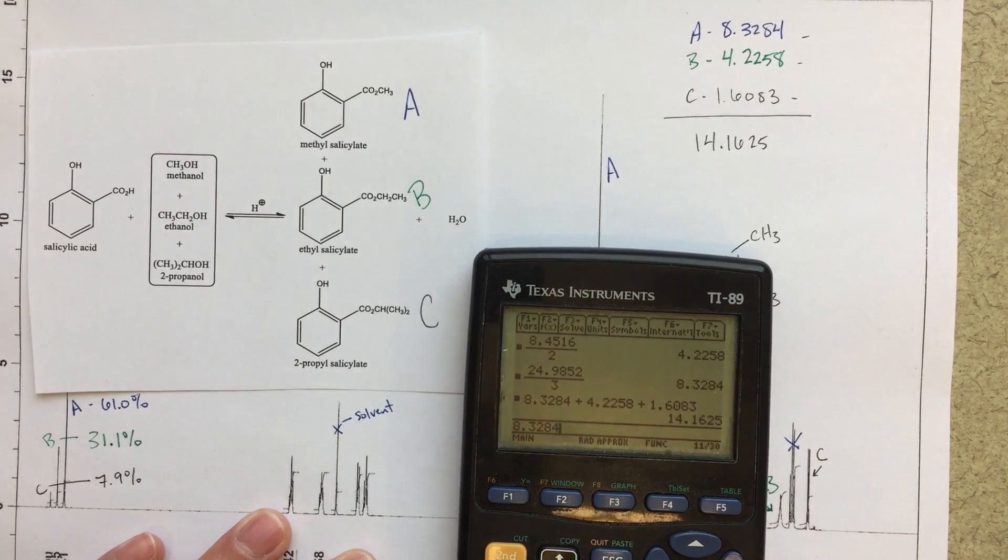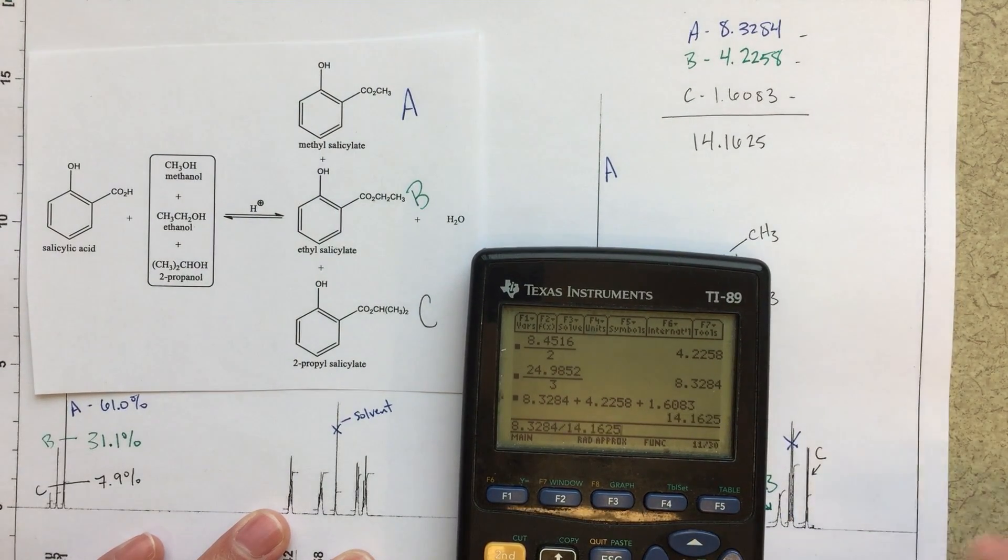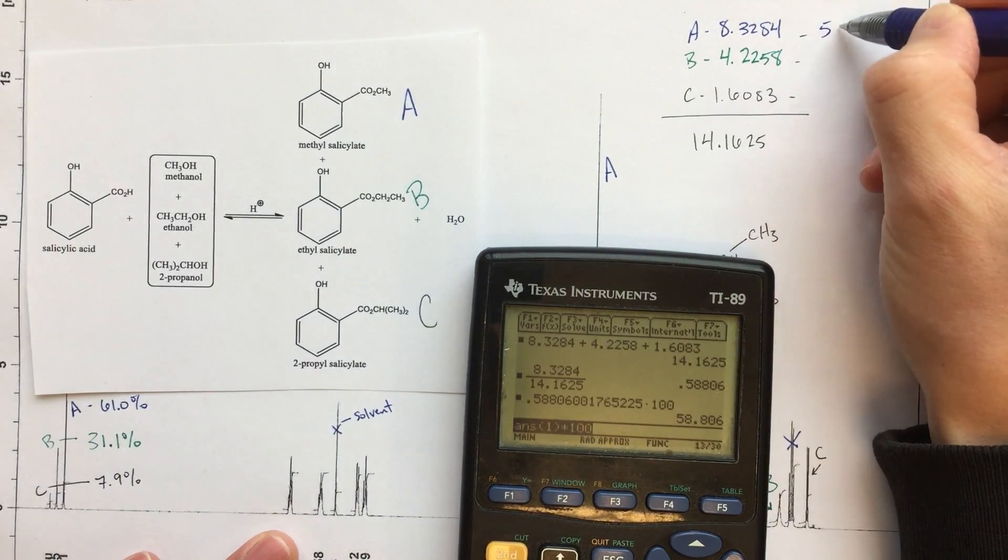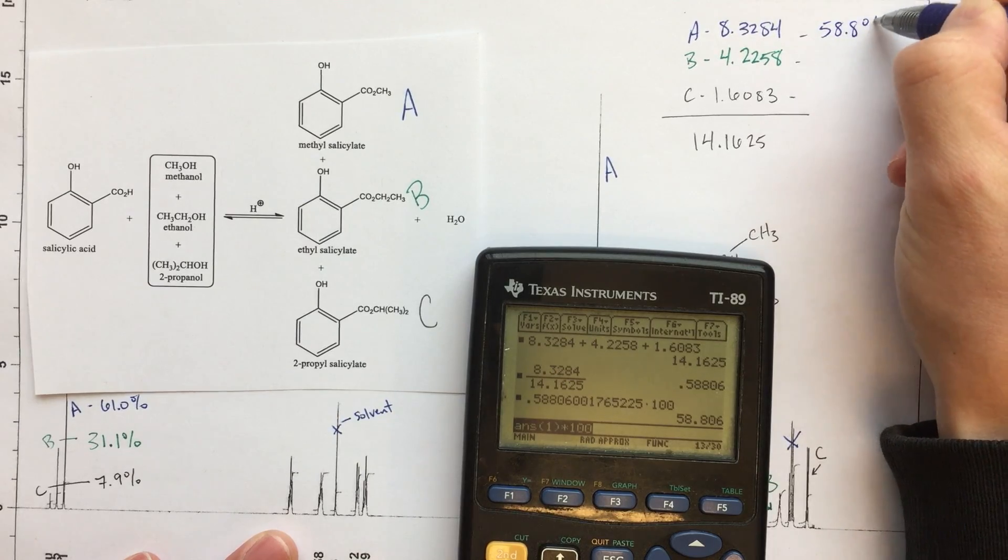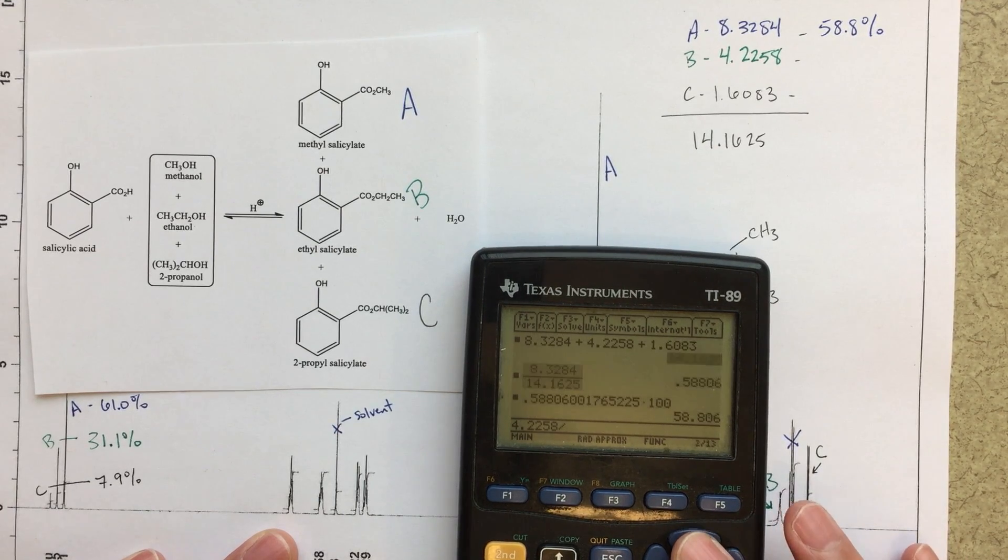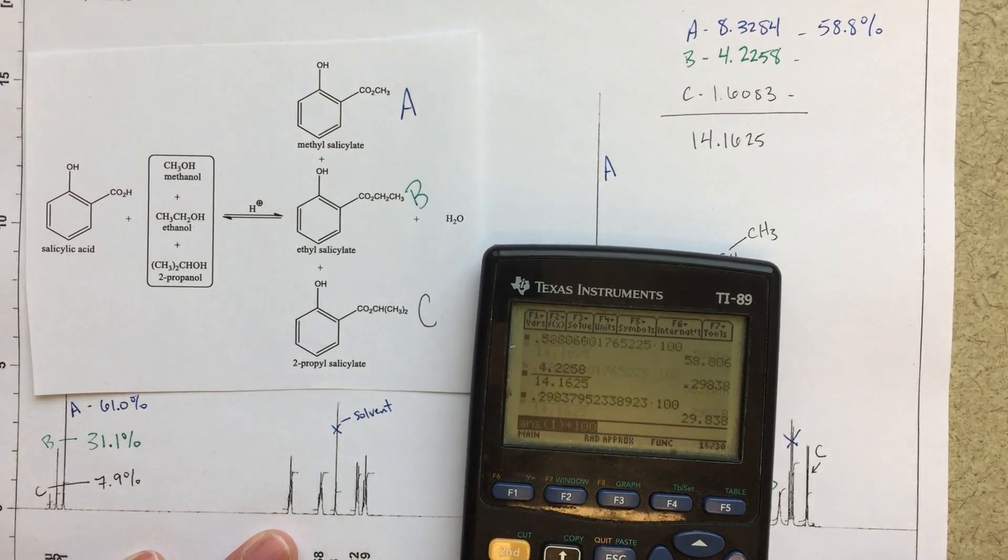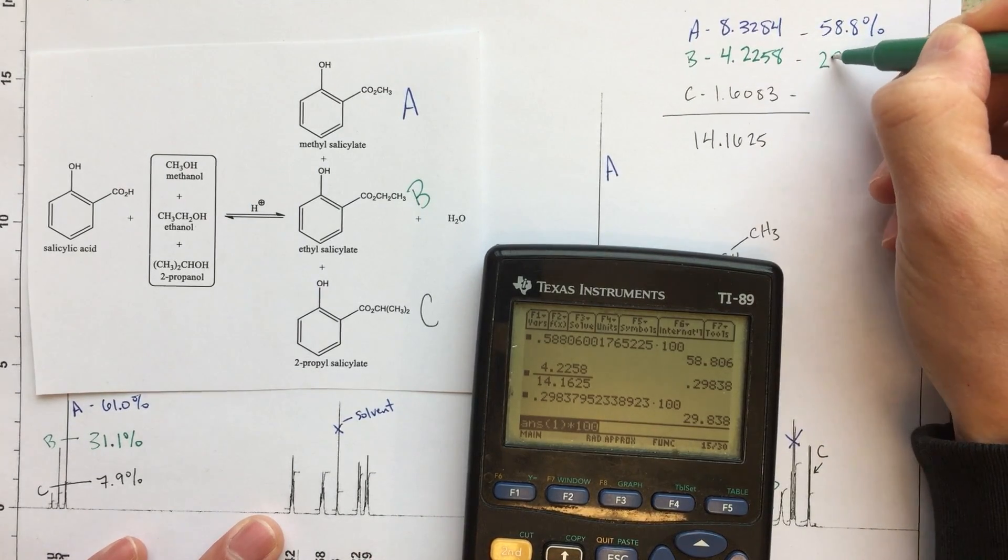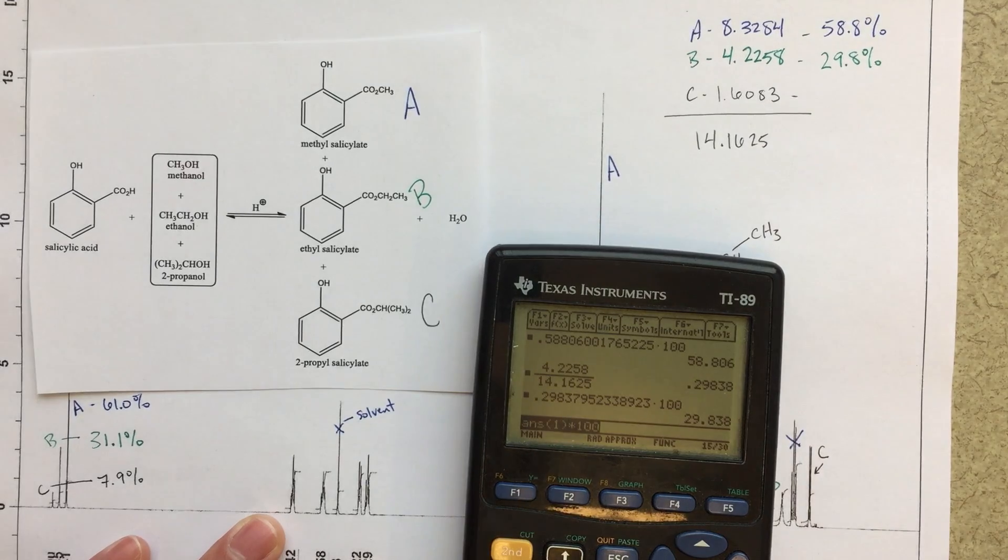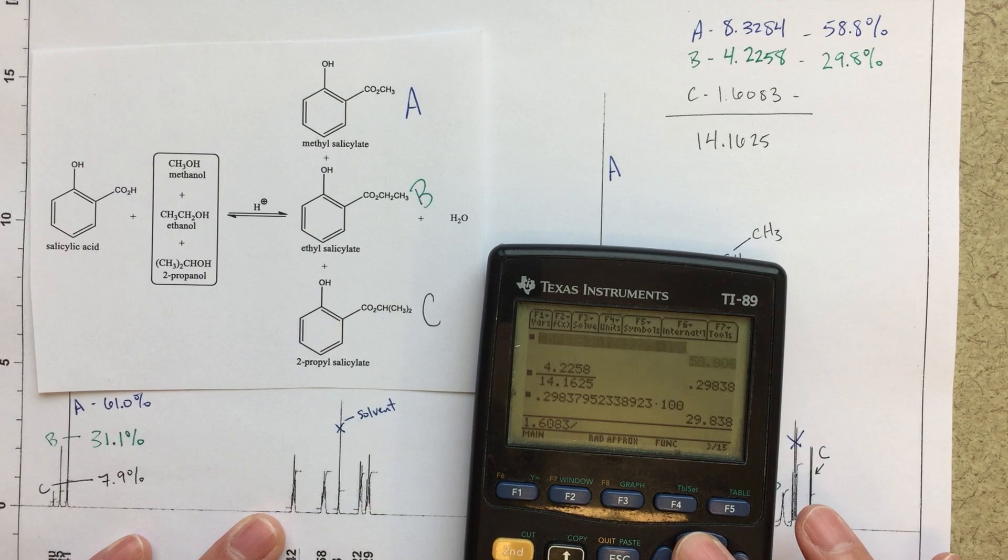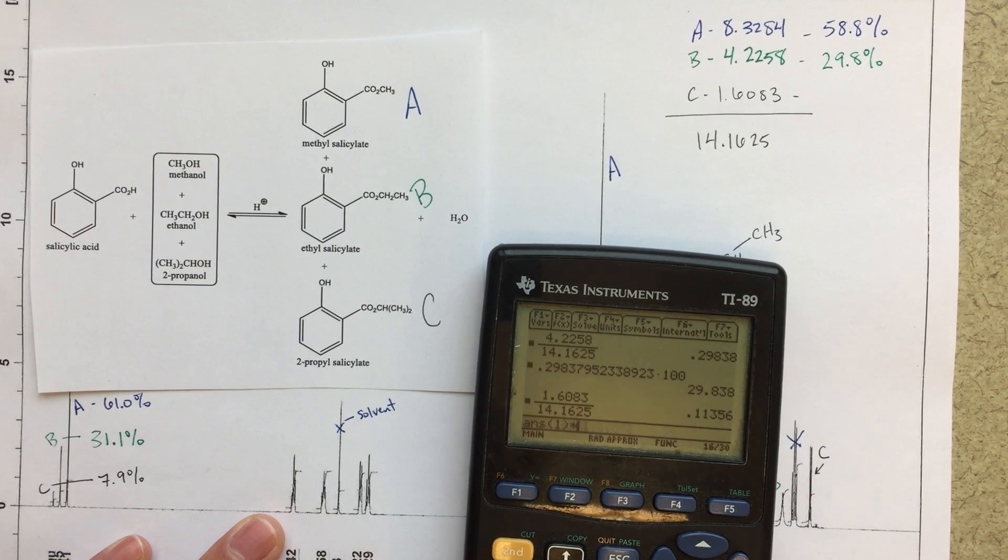So 8.3284 divided by the total, multiplied by 100. And these should be very close to what we saw before, 58.8%. We'll do the 4.2, the B next, divided by my total. We've got, we should keep the colors all nice, 29.8%. And then for our last one, 1.6083 divided by my number times 100. And we end up with 11.4%.